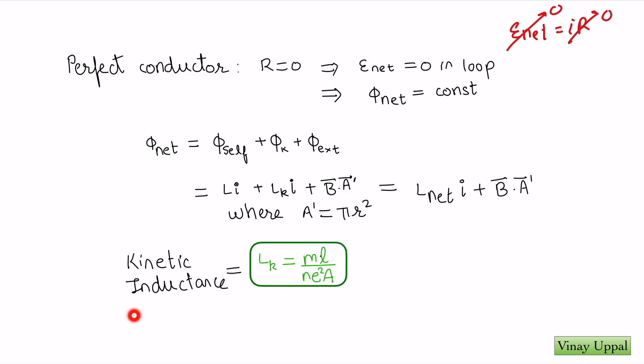What was kinetic inductance? Once again, I am going to refer you to the video on kinetic inductance whose link I have put in the description. We had derived that kinetic inductance is ML by NE squared A, where M was mass of one electron, L was the loop length which in this case would be 2πR, N is the free electron density, E is the charge of an electron, and A was the cross-sectional area.